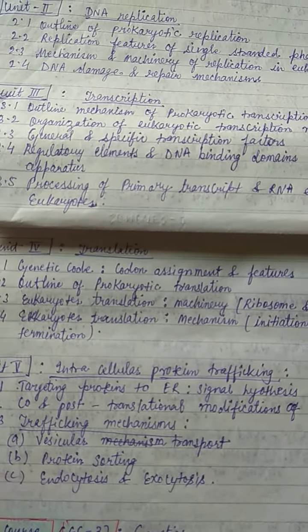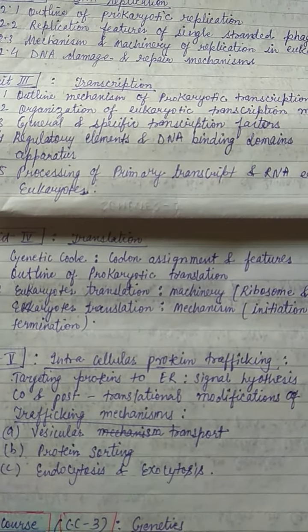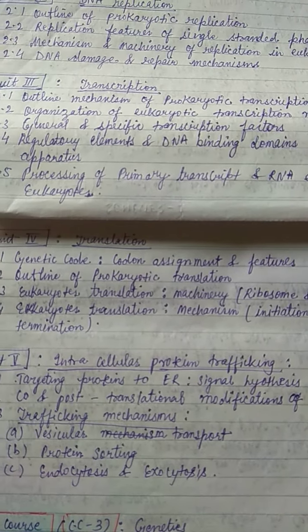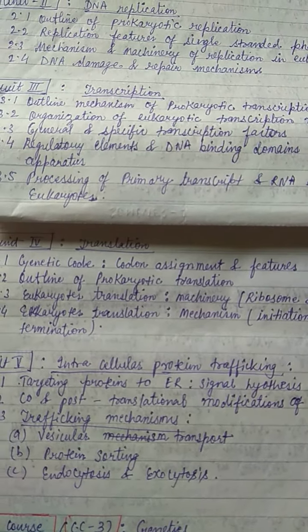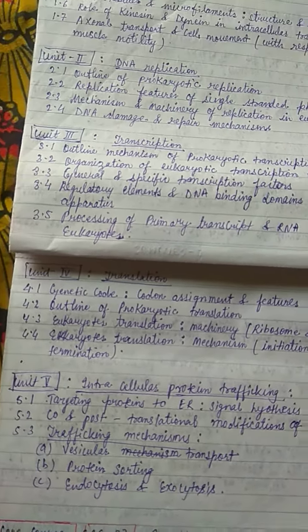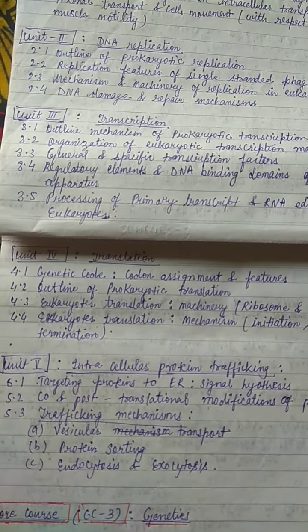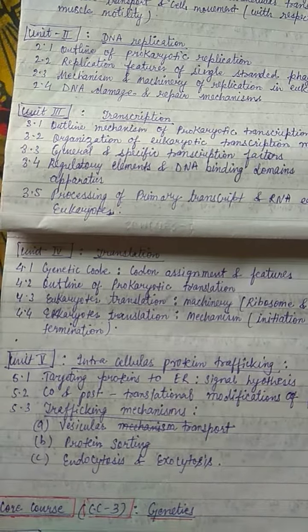In Unit 5 there is intracellular protein trafficking: targeting and sorting to the ER, signal hypothesis, co- and post-translational modification of proteins. The trafficking mechanism includes three subtypes: vesicular transport, protein sorting, and endocytosis and exocytosis.